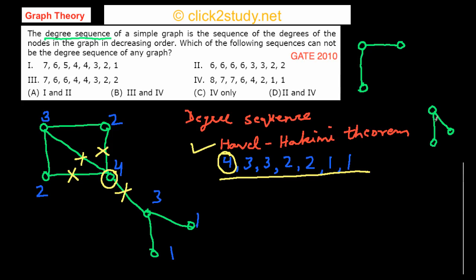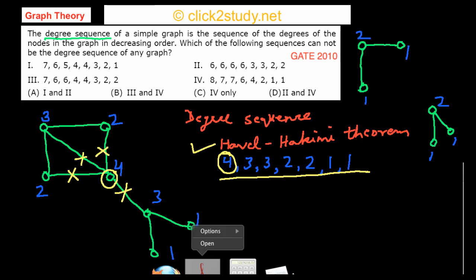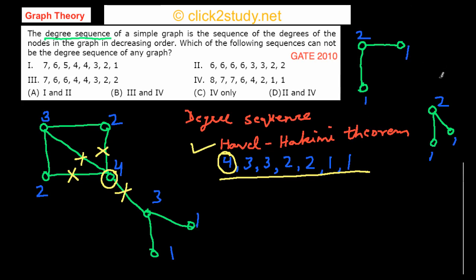Now let's find the degree sequence of the remaining graph. The degrees of the remaining vertices are: 1, 1, 1, 1, 2, and 2. Writing them in decreasing order, the new degree sequence is: 2, 2, 1, 1, 1, 1 — six terms, since one vertex was removed.